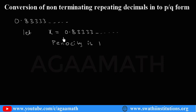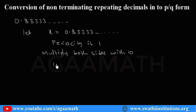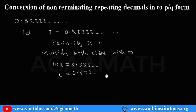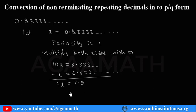As periodicity is 1, we have to multiply both sides with 10. So 10x: when you multiply this number with 10, you get 8.3333 and so on. You have to subtract whatever you have taken, so minus x equals 0.8333 and so on. When you subtract, 10x minus x is 9x, and you get 7.5, so 9x equals 7.5.